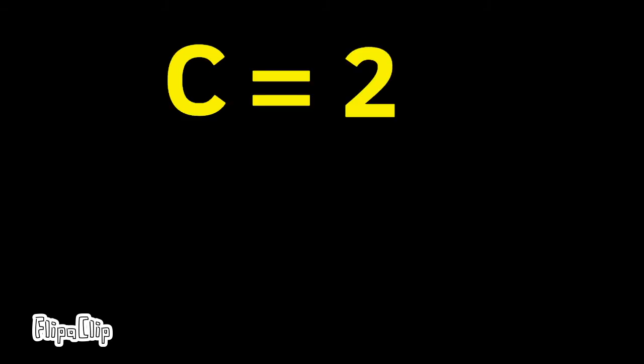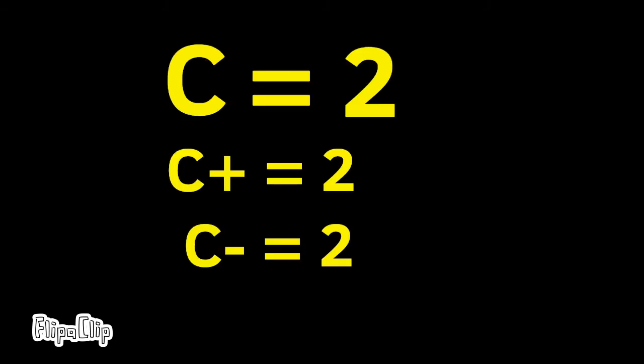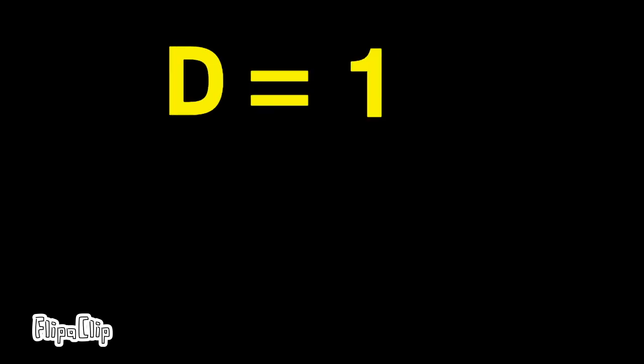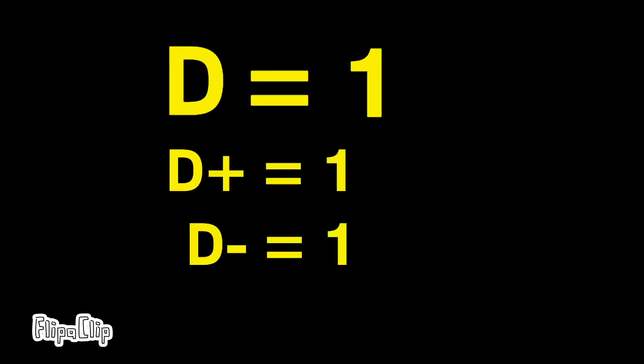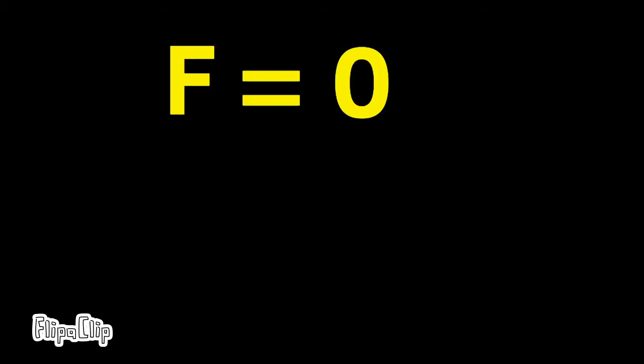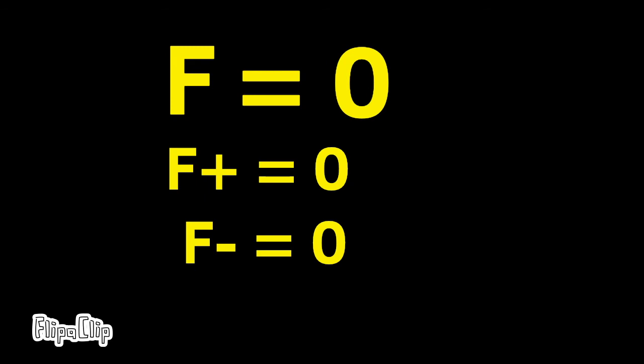C's are worth 2 points. A C plus is also worth 2 points, and so is a C minus. D's are worth 1 point. A D plus is also worth 1 point, and so is a D minus. And F's are worth 0 points. An F plus is worth 0 points, and so is an F minus.